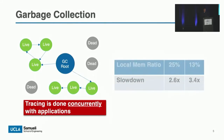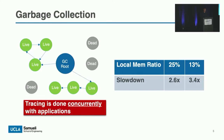We ran Spark KMeans with G1GC on 25% and 13% local memory ratios. The local memory ratio here means the ratio of the local memory capacity on the host server over the total amount of available memory on both the host server and the remote side. As we can see, the slowdown is over 2.6 times and 3.4 times, respectively.